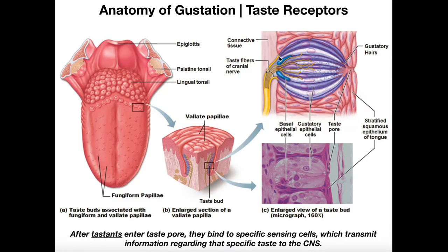This round structure here is actually the taste bud, and it's composed of multiple different types of cells, which we'll discuss in a few minutes. This taste bud is housed within layers of stratified squamous epithelium, which is the tissue that composes the tongue. In the deeper parts, this is the underlying connective tissue associated with the tongue.